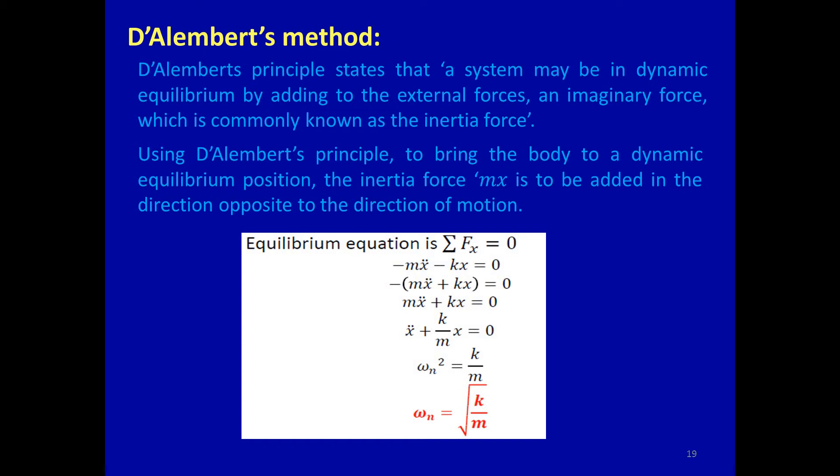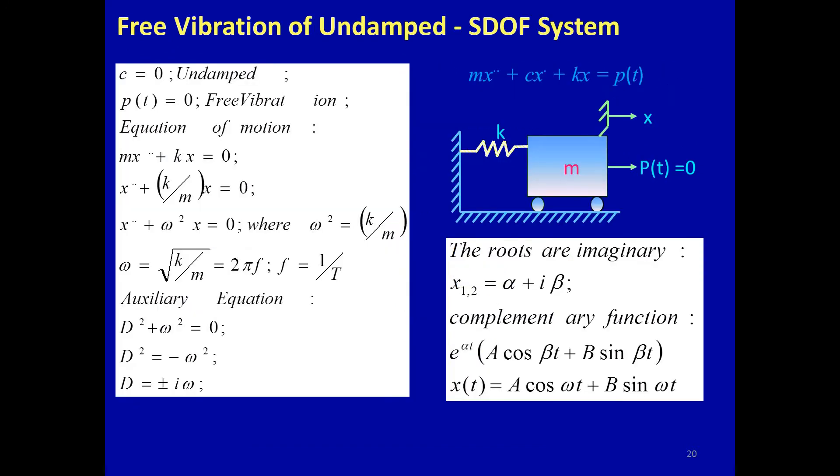Applying ΣFx = 0, we get −mẍ − kx = 0. Taking the negative sign as common: −(mẍ + kx) = 0, which gives mẍ + kx = 0. Dividing both sides by m: ẍ + (k/m)x = 0, so ω_n² = k/m, and therefore ω_n = √(k/m). This confirms that both the energy method and D'Alembert's method yield the same natural frequency formula: ω_n = √(k/m).